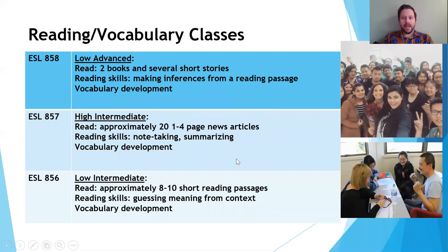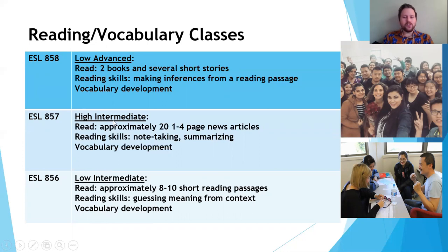Our final group of main core classes are reading and vocabulary. In ESL 856, our low intermediate reading class, you will read approximately eight to ten short reading passages and learn skills such as guessing meaning from context. Of course, you will also develop your vocabulary, as reading is the best way to build it. In ESL 857, our high intermediate class, you will read 20 one to four page news articles. There is more reading and it is longer because you are building your reading fluency — you'll become a faster and more comfortable reader. Some skills you'll learn are note taking and summarizing.